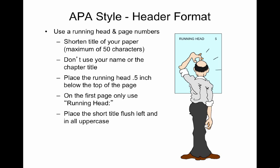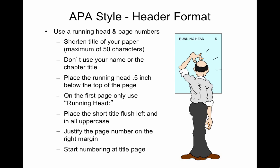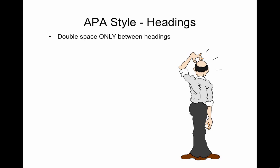Justify the page number on the right margin and start numbering at the title page. Headings: double space only between headings. You should not use larger text for formal papers for your headings, but do follow the criteria given to you by whoever you're submitting the article to. Select the appropriate number of headings: 3 to 5 for long papers with chapters and 1 to 3 for short papers.